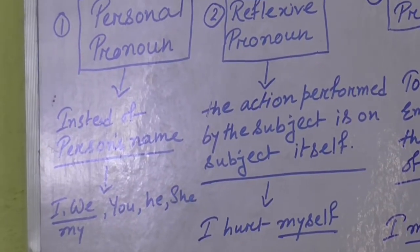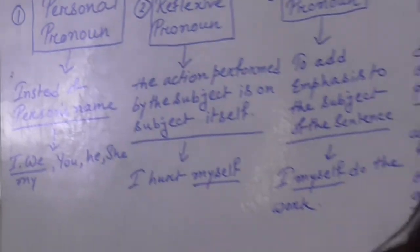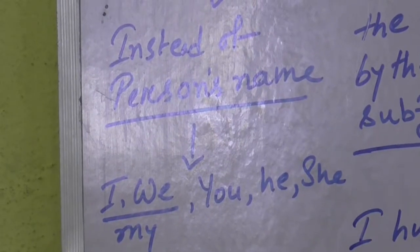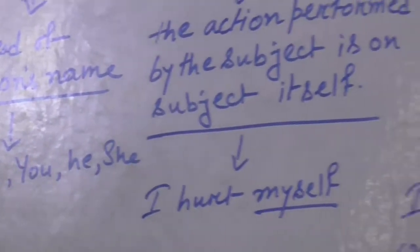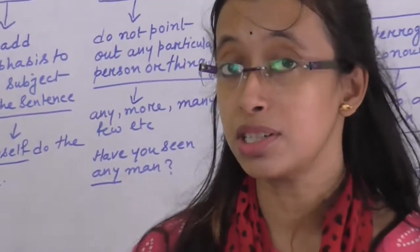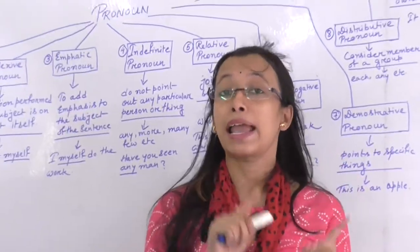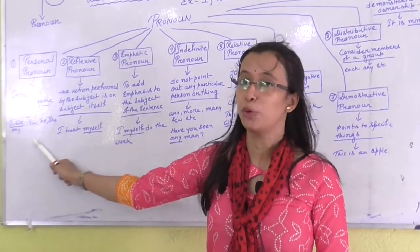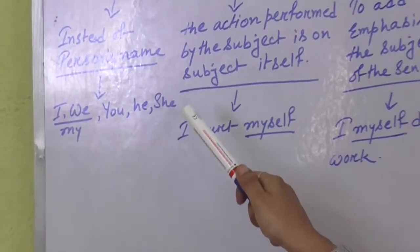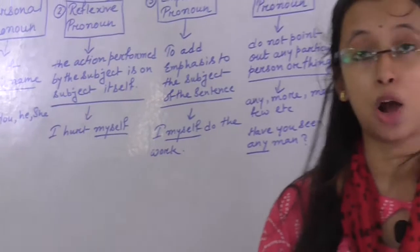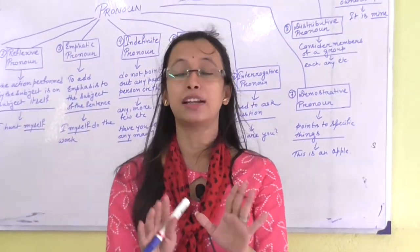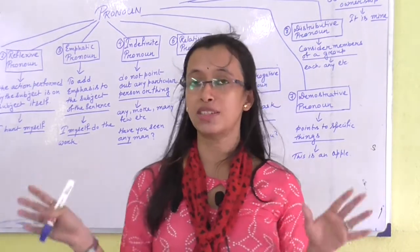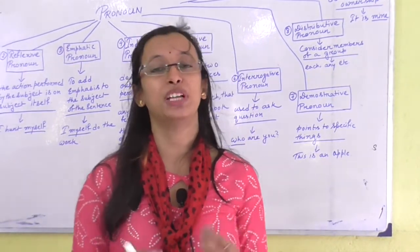Number one: personal pronoun. From this word we can understand that it is definitely about a person. Instead of any person's name we use pronoun — personal pronoun. And it is called personal pronoun because it is generally used for three persons: first person — I and we; second person — you; third person — he and she. It and they are also personal pronouns. So instead of a person's name, the pronoun we use is called personal pronoun.